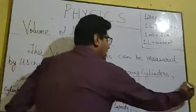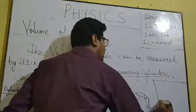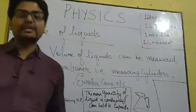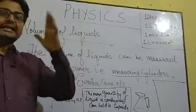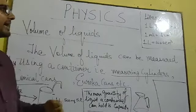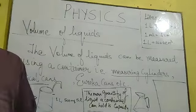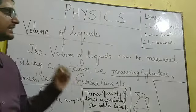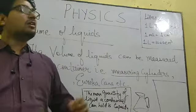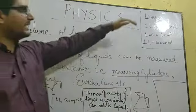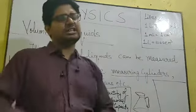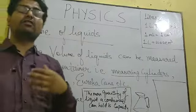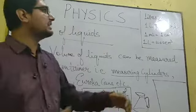In the case of solids we were talking about volume in centimetre cubes or metre cubes. Here, for liquids, we will talk in terms of litres and millilitres. The standard unit for calculating the volume of liquid is litres.